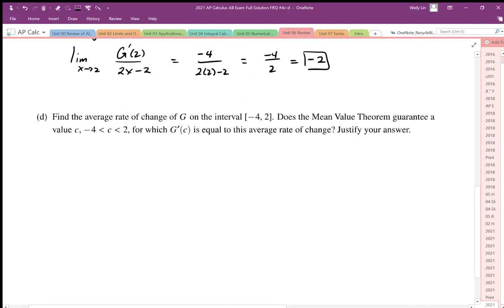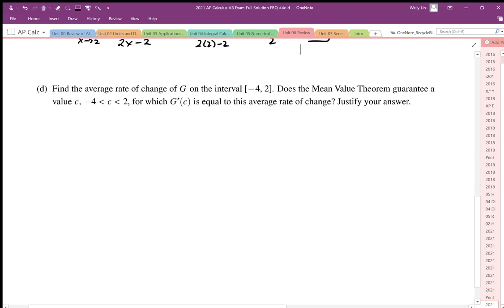Part D of this problem says find the average rate of change on the interval of negative 4 to positive 2. So find the average rate of change, this is the average value function.